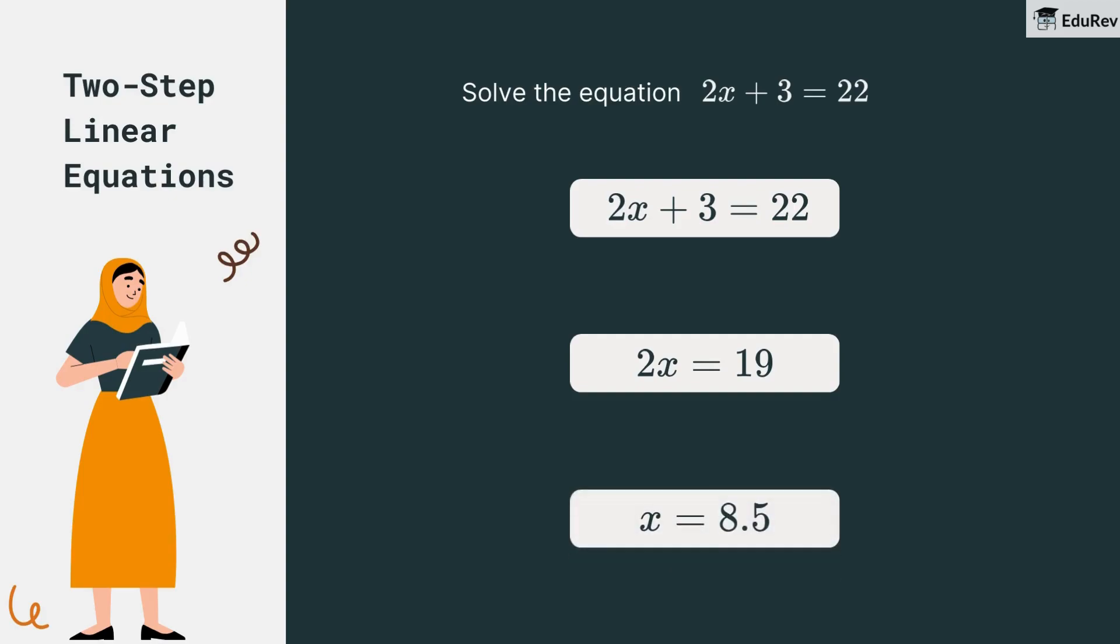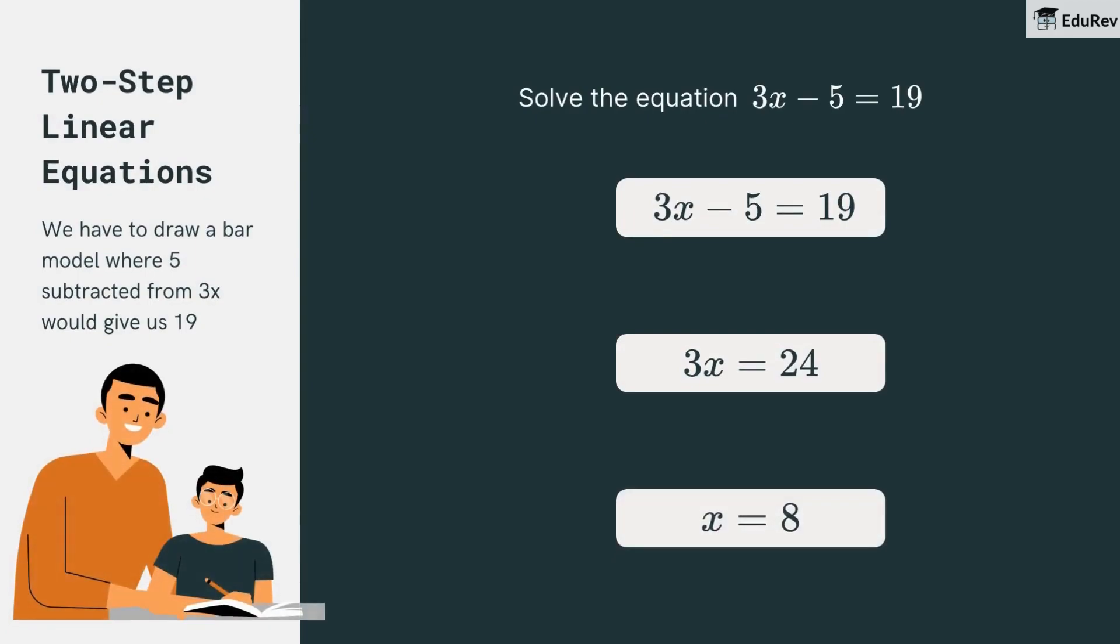We'll do the same for 3x minus 5 is equal to 19, and guess what? x is 8 again. See, not so hard after all.